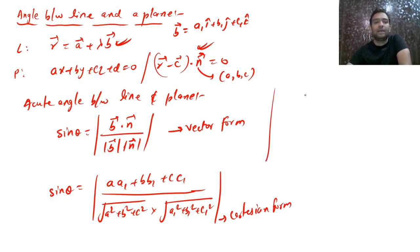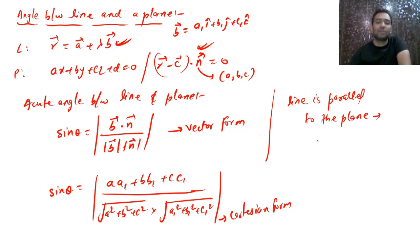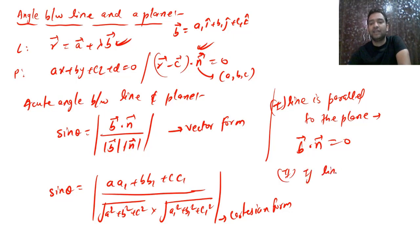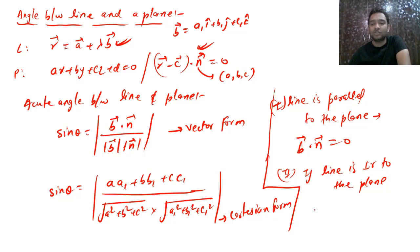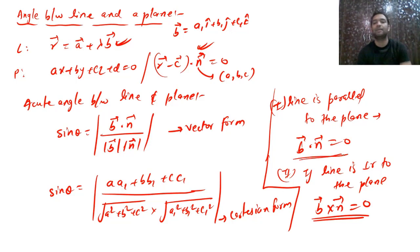Special cases for line and plane: if the line is parallel to the plane, then **b**·**n** = 0. If the line is perpendicular to the plane, then **b**×**n** = 0 (i.e., **b** and **n** are parallel).